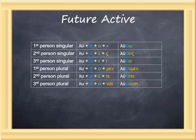The future active is formed by using the future active tense stem—in luo it's identical to the present—a tense formative, the sigma, plus a connecting vowel and a primary ending. So: luso, I shall destroy; luseis, you singular will destroy; lusei, he, she, or it will destroy; lusomen, we shall destroy; lusete, you plural will destroy; lusousi, they will destroy.